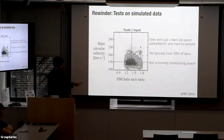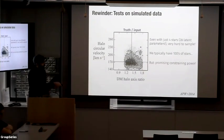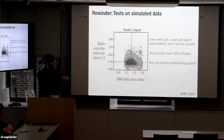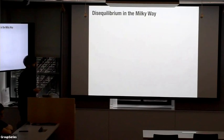That was four stars, but typically we have hundreds or at least tens of stars in a stream. So extending this to real data has pretty promising constraining power given that this is just using four stars.